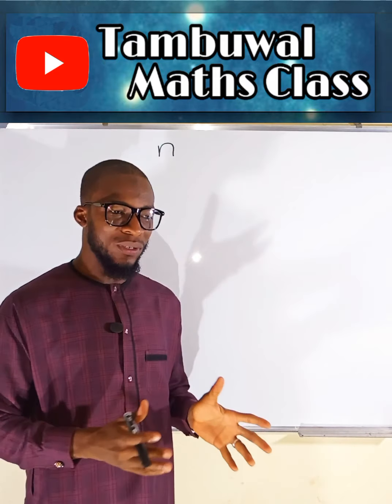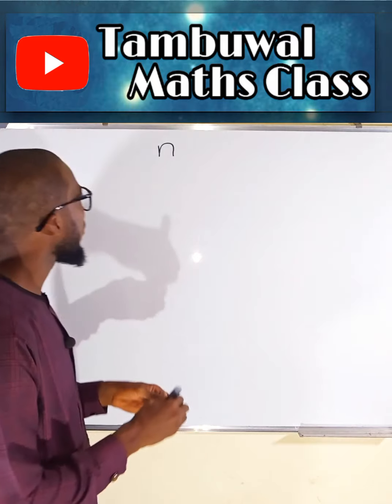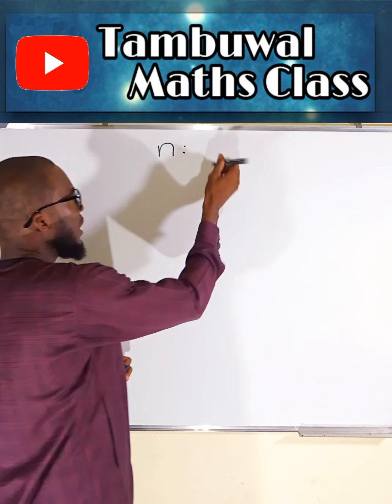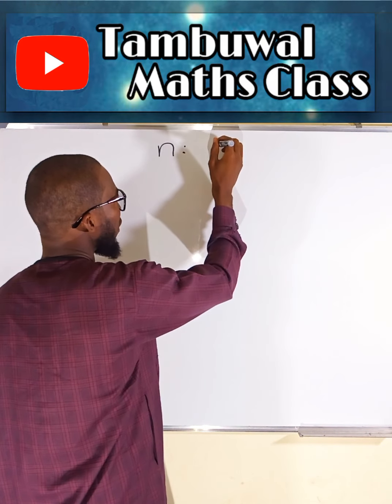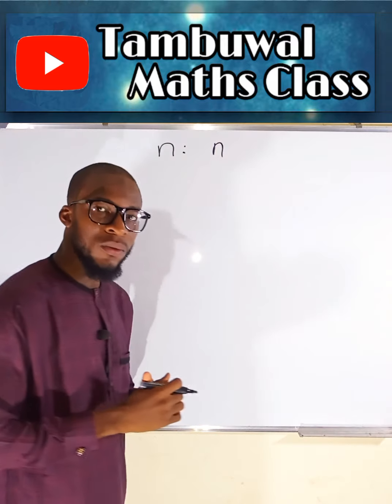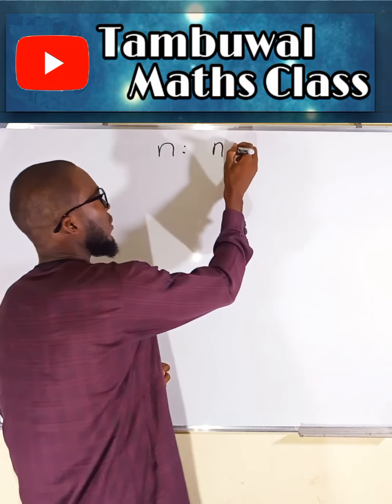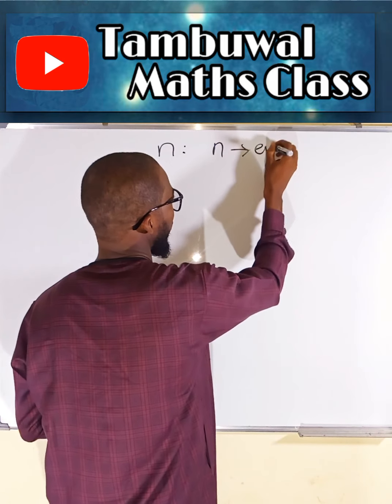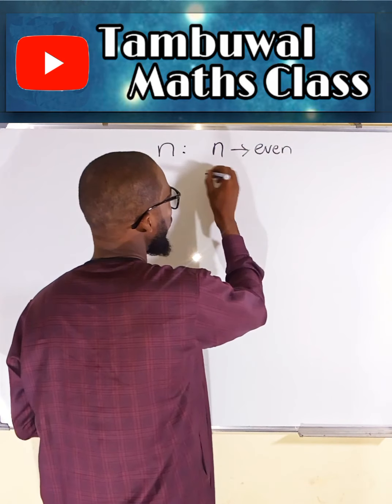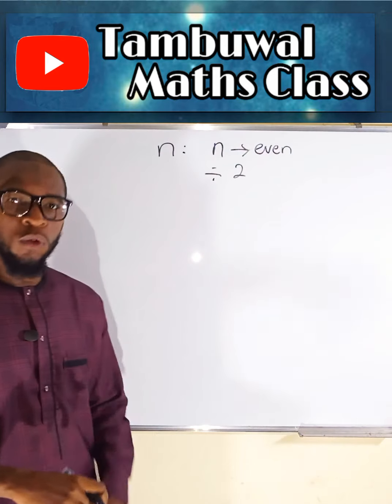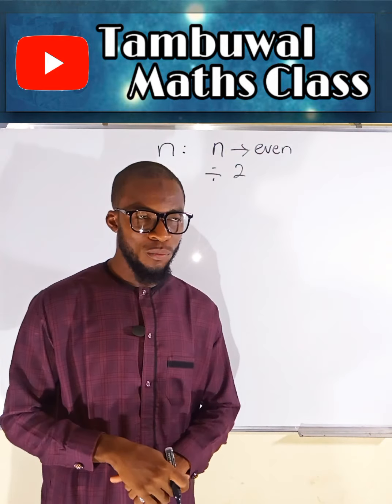So what happened? The first rule: if this number N is even, we are going to divide it by 2, continuously dividing the number by 2.